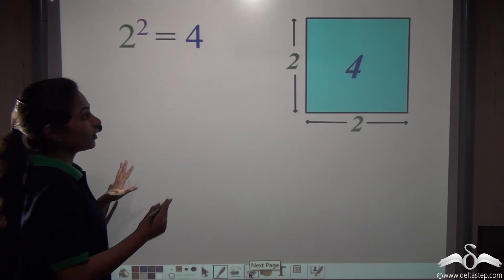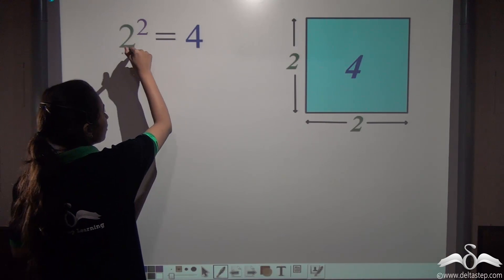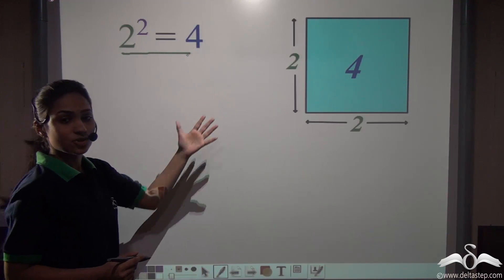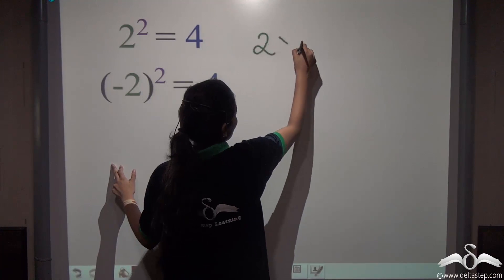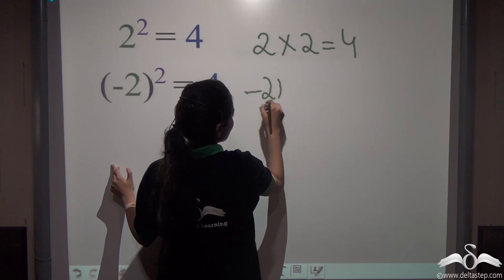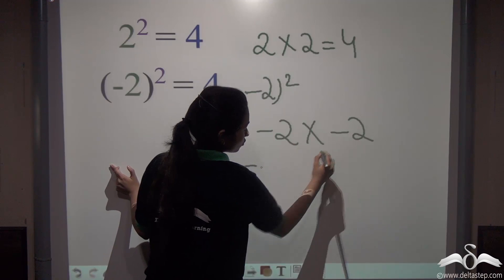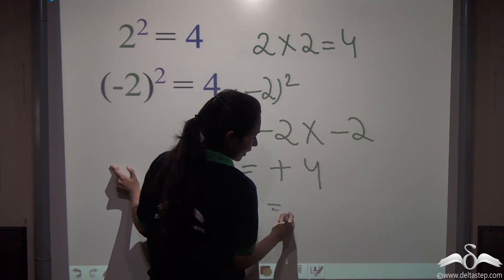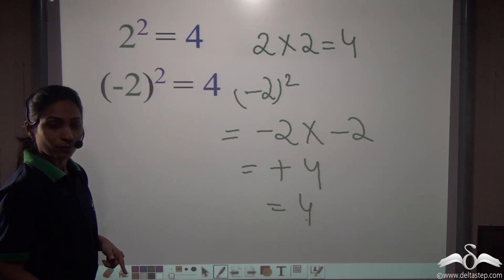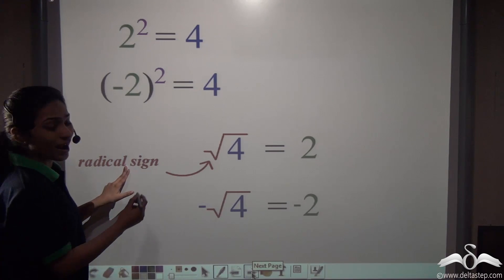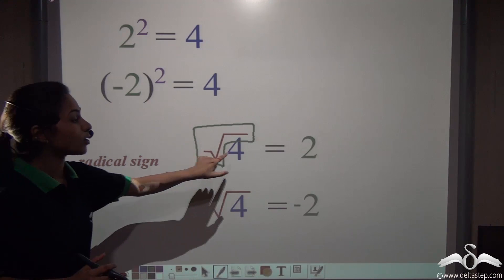In geometry, length cannot be negative, so 2 squared gave us 4. But outside geometry, we can also say that minus 2 squared gives us 4, since minus 2 into minus 2 is also 4. So both 2 squared and minus 2 squared equal 4. This radical sign here is called the principal square root, which denotes the positive square root.